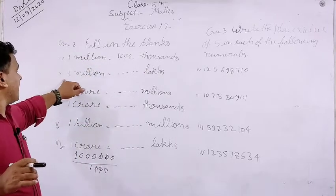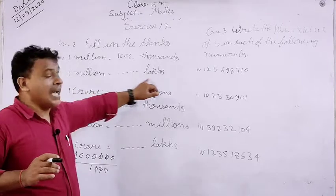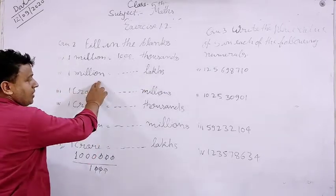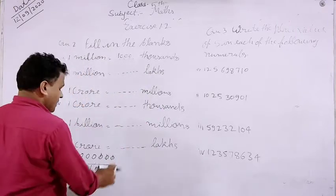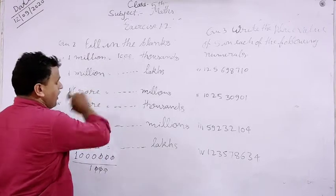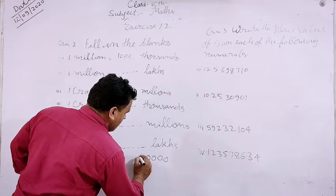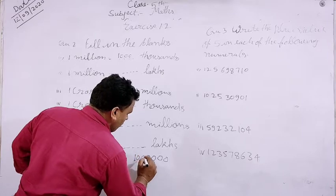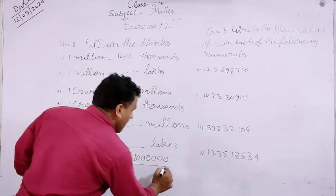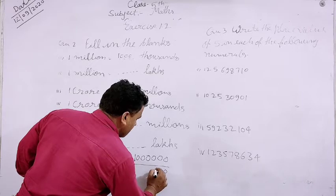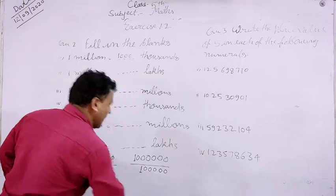Isi tarah se aap next dekhenge — yahan pe diya gaya hai one million ko aapko lakhs mein change karna hai. You will change one million into lakhs. It is in the International System and you will change it into the Indian System. Toh isko bhi same isi tarah se karenge — pehle aapko one million note karna hai: ones, tens, hundreds, thousands, ten thousands, one lakh, aur million.